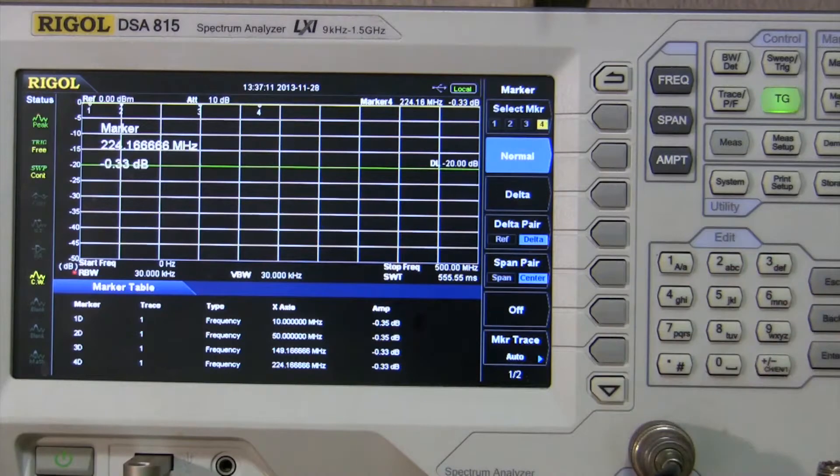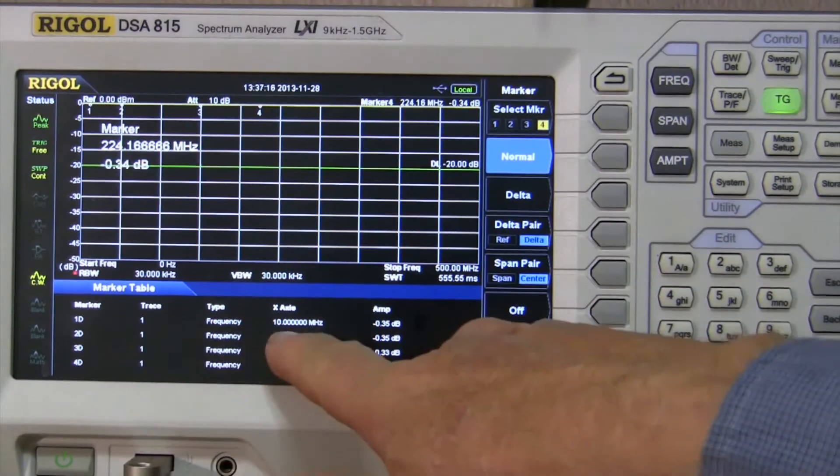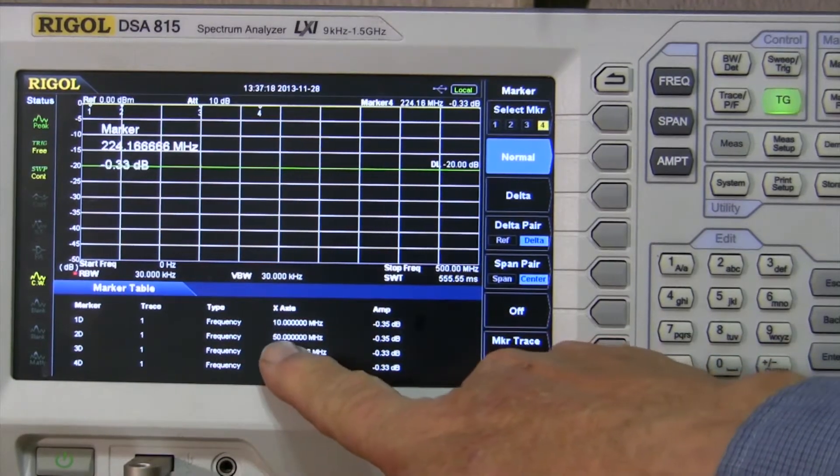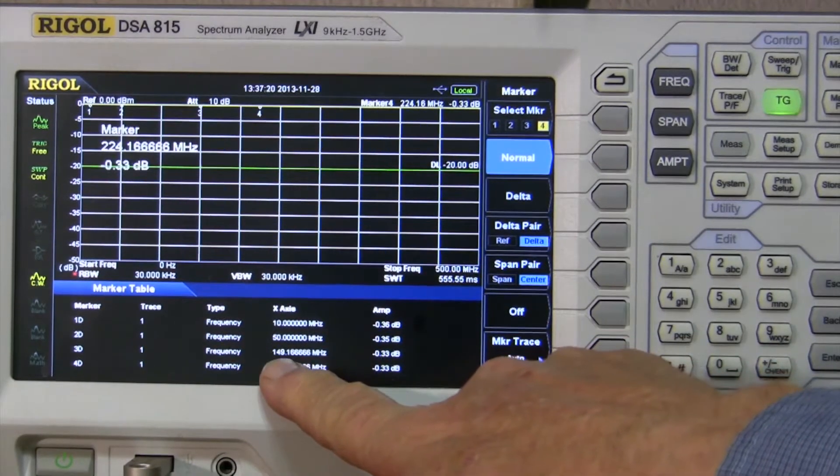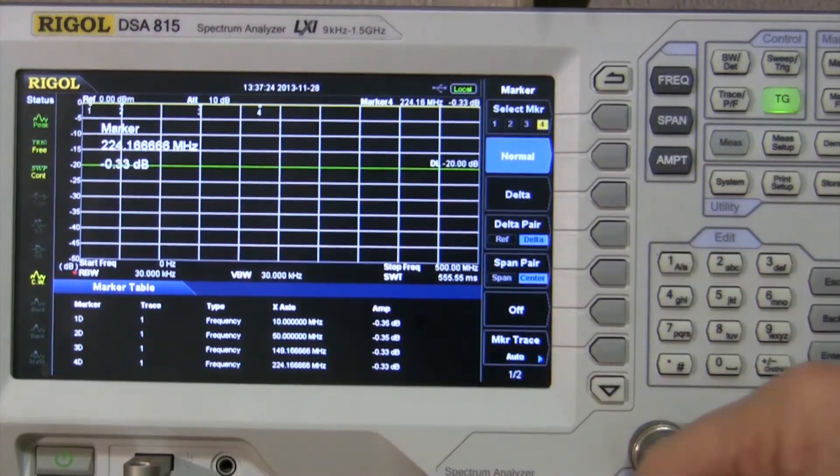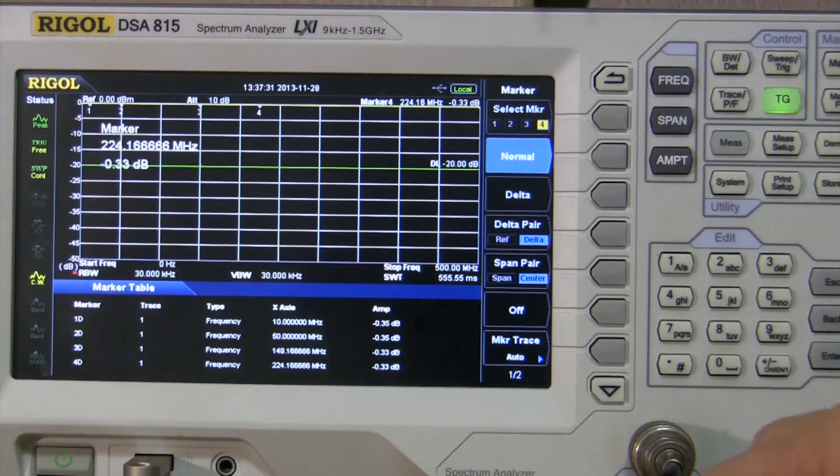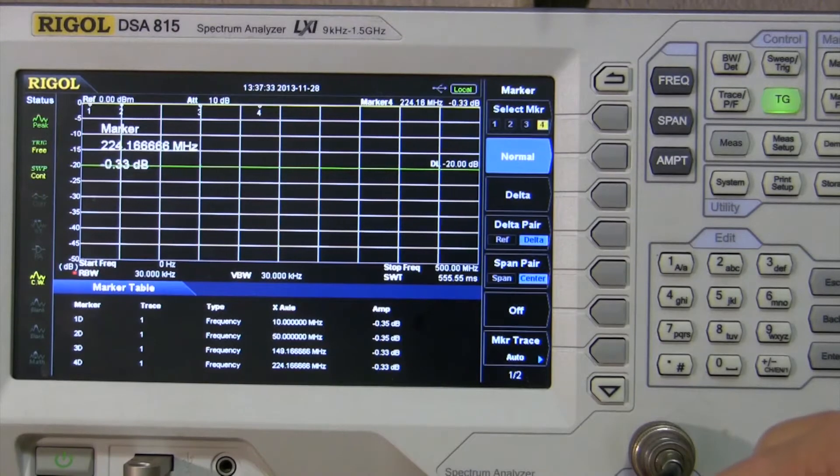I previously set this thing up. What I've got set up at the moment is I've got 10 megahertz, 50 megahertz, 149 megahertz, and 224 megahertz as the frequencies of interest for this antenna switch that I'm going to be looking at in a minute.